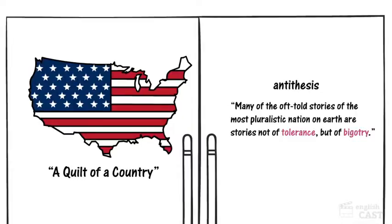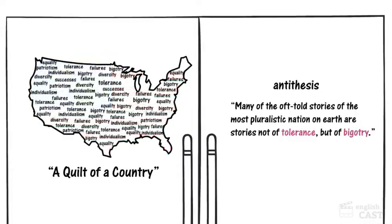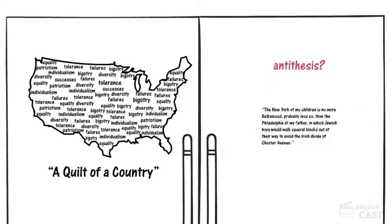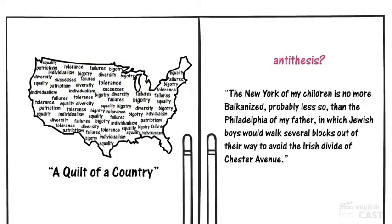But not everything that Quinlan contrasts forms an antithesis. For example, check out this sentence. Two things are compared using a parallel construction, but there's nothing really opposite about New York and Philadelphia.